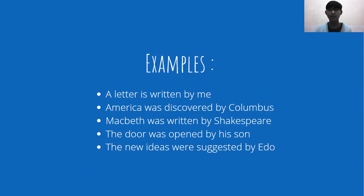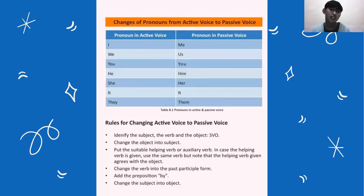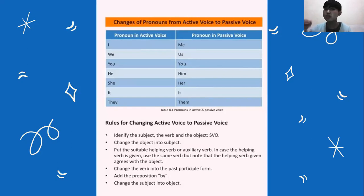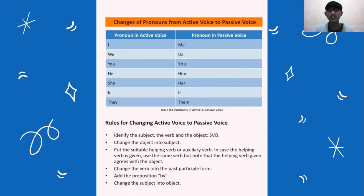Maybe you still didn't understand about passive voice, so the next slide I'm going to explain. Changes in pronouns from active voice to passive voice: in active voice — I, we, you, he, she, it, they. In passive voice, the object pronouns become — me, us, you, him, her, it, them. So if you use 'I,' it changes to 'me.' 'We' changes to 'us.' 'You' stays 'you.' 'He' changes to 'him.' 'She' changes to 'her.' 'It' stays 'it.' 'They' changes to 'them.'